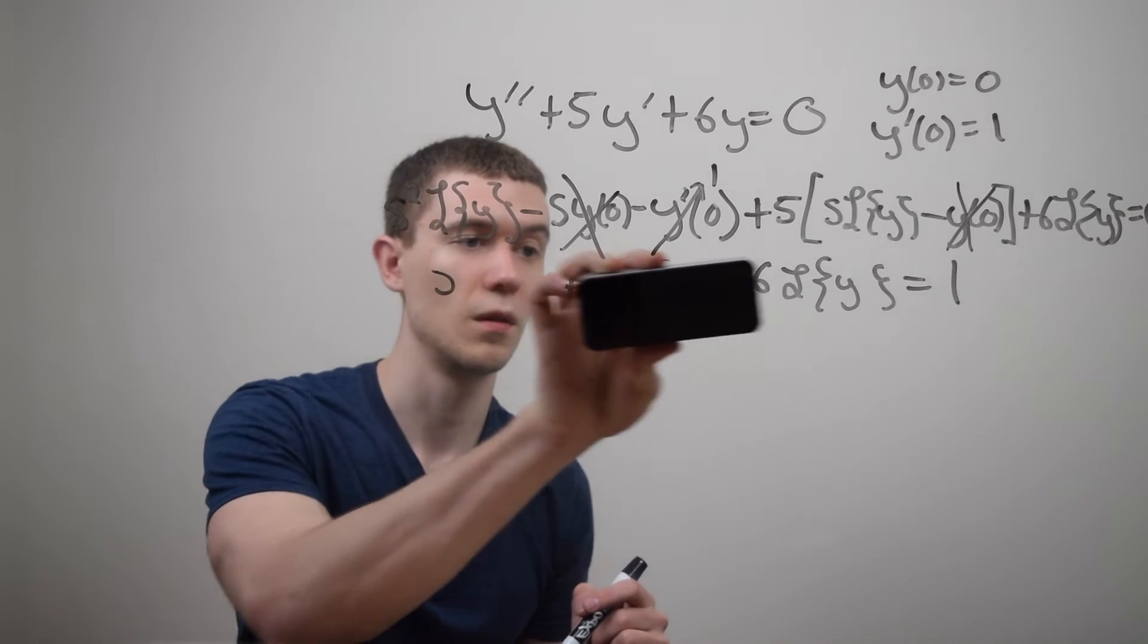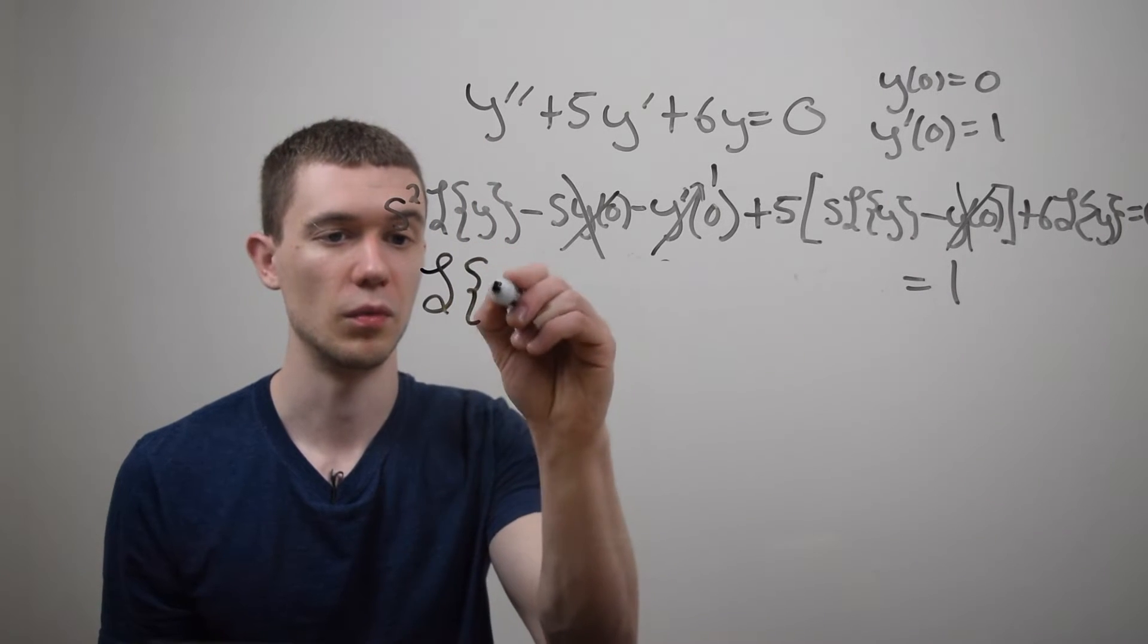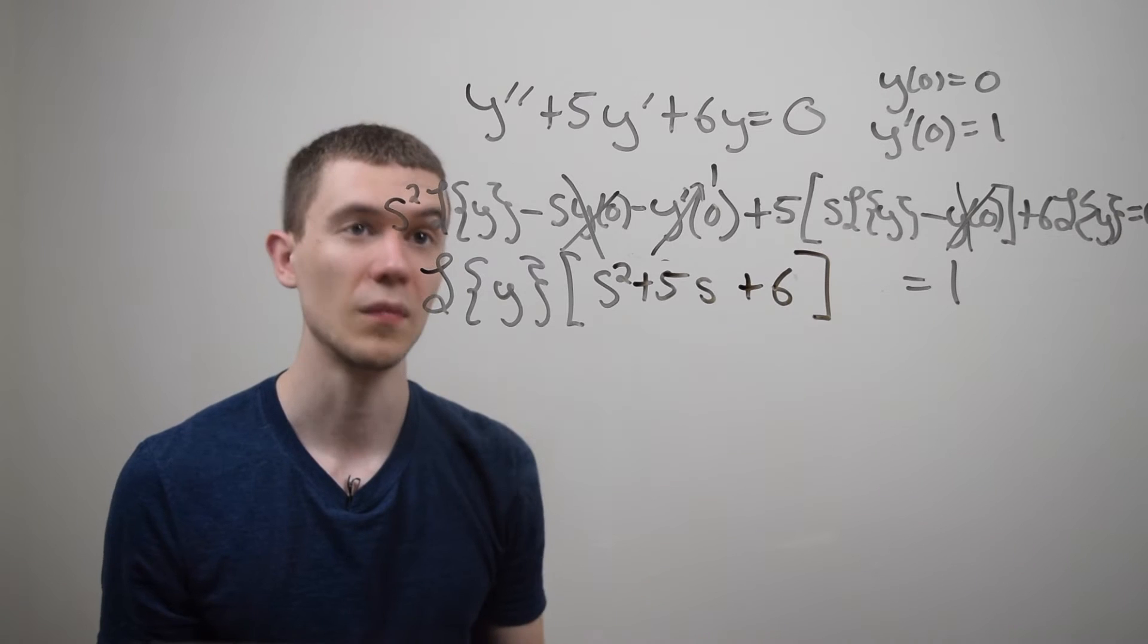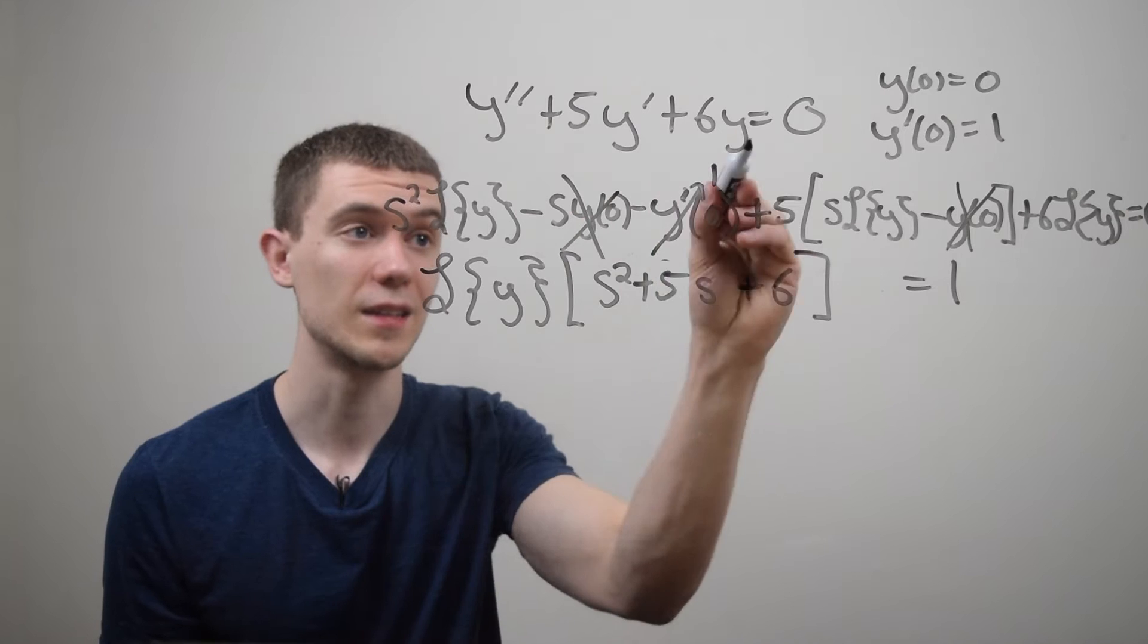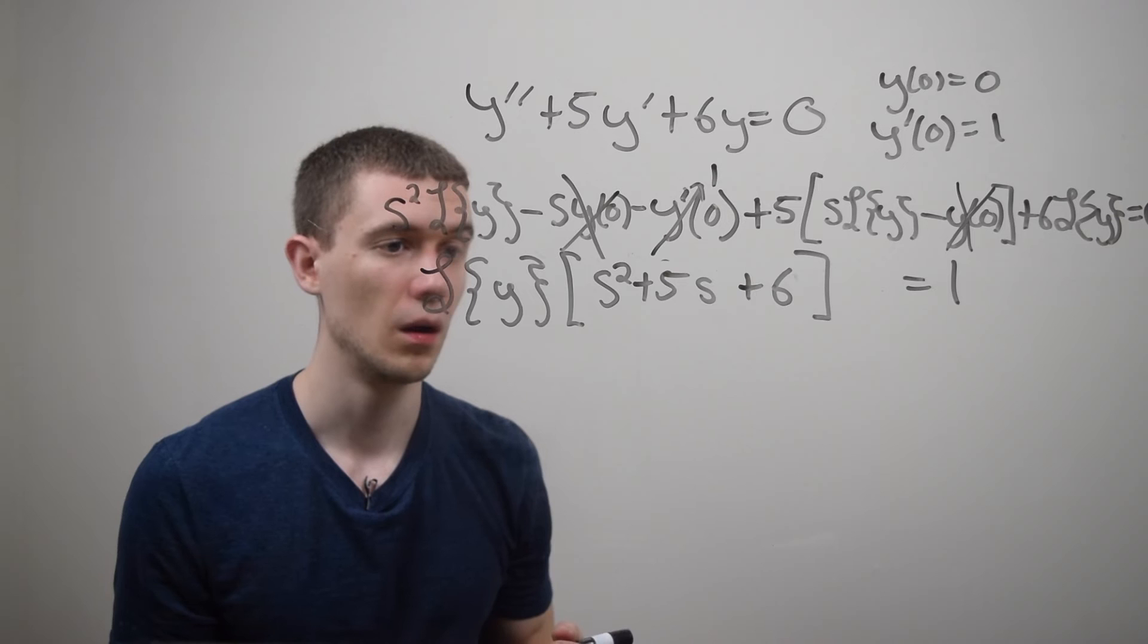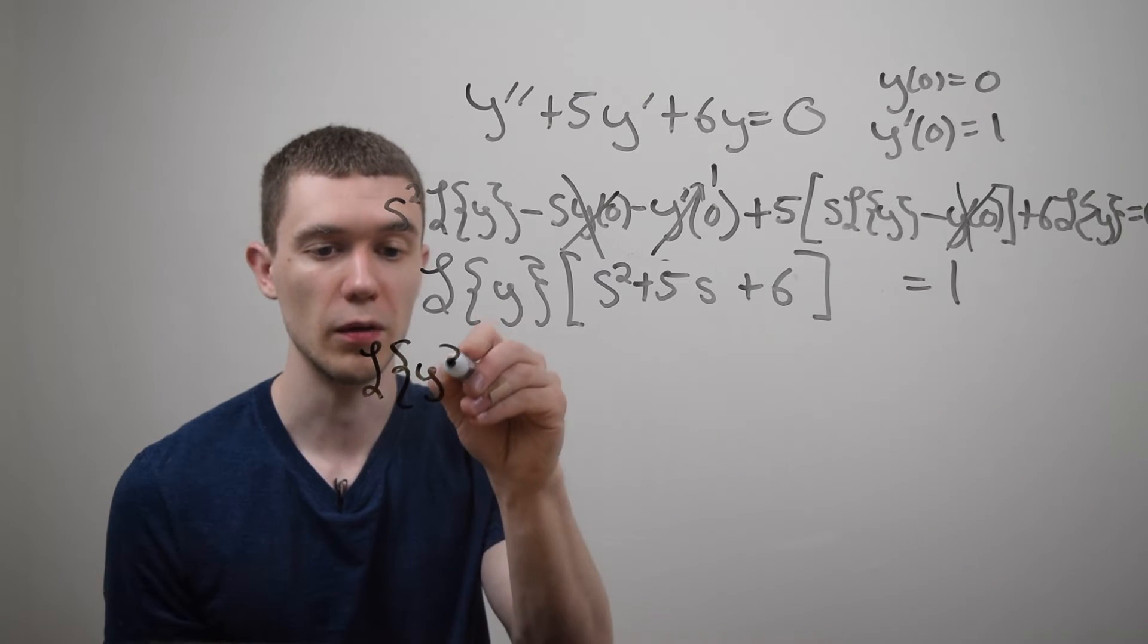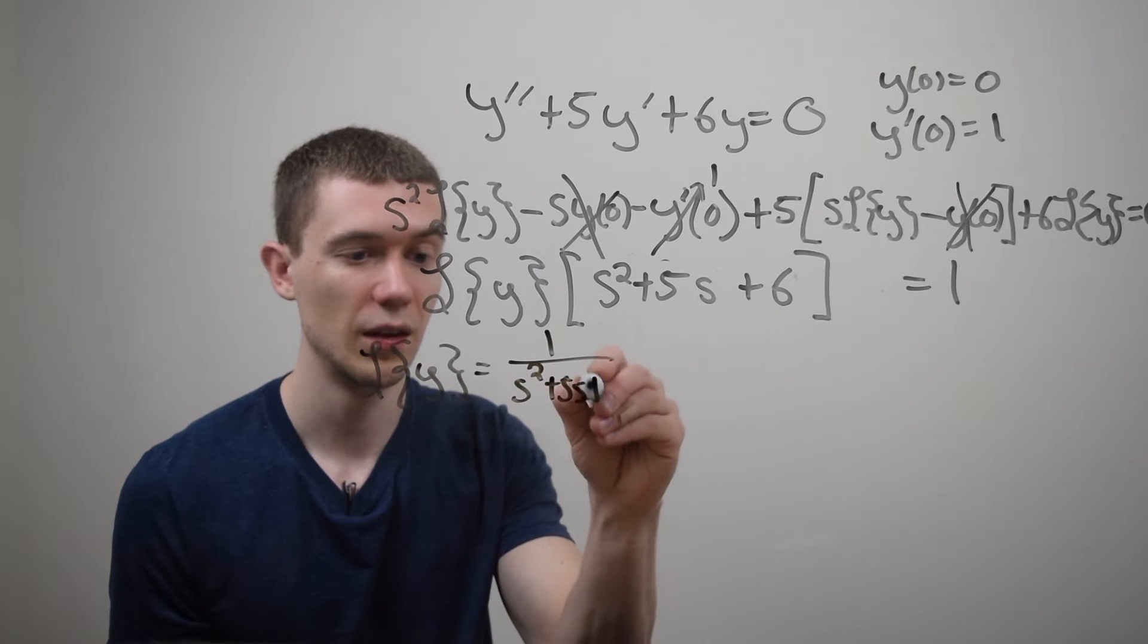Maybe I'll just rewrite this. So this is going to look like Laplace transform of y all times s squared plus five s plus six. And this is no coincidence that the s squared plus five s plus six looks a lot similar to the original differential equation we were given. I can divide both sides by this thing to solve for the Laplace transform of y. I'll just divide by whatever's next to it to get one over s squared plus five s plus six.